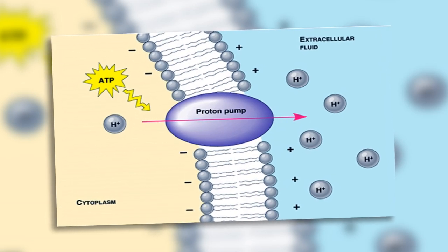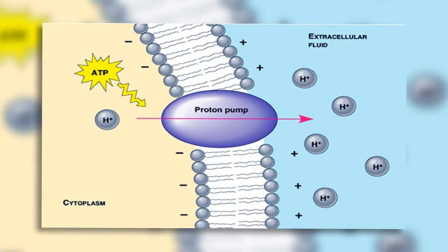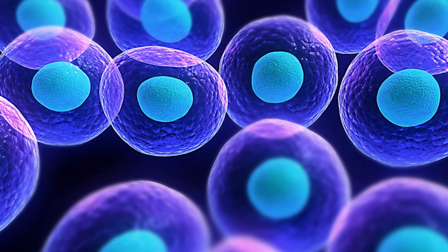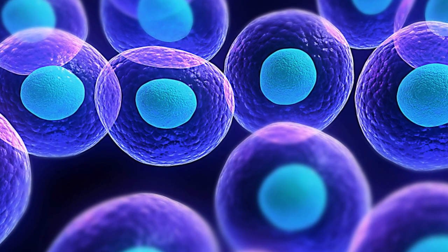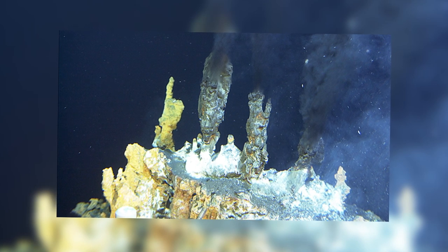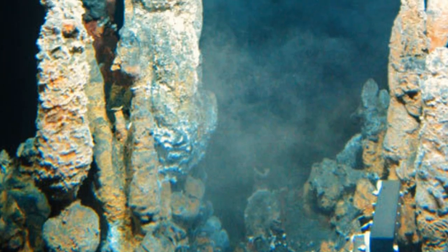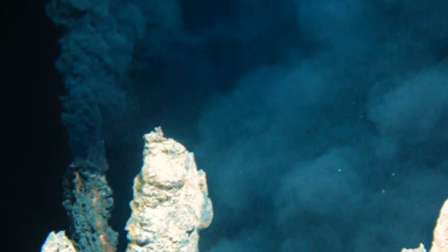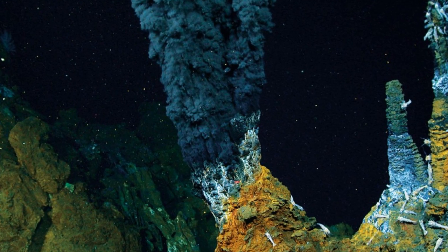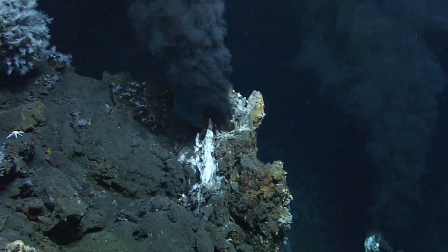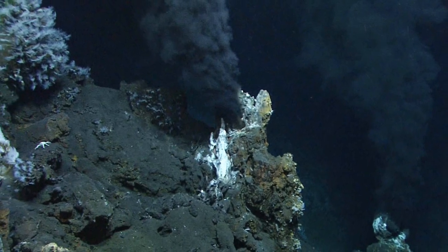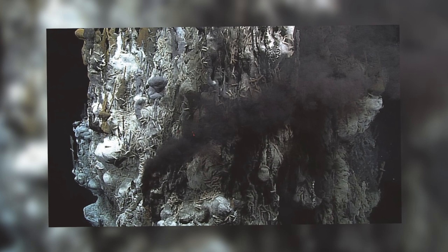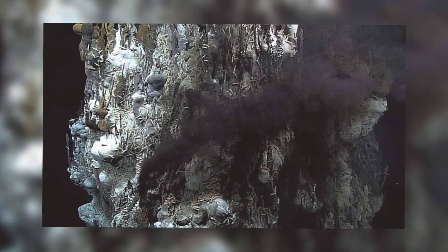Cells today achieve this by using proton pumps — complicated structures in the cells that move protons across their membranes to maintain the gradient. However, these are very complex structures that could not possibly have suddenly come into existence. So the theory goes that life must have begun somewhere that had a natural proton gradient of its own, and just such a place happens to exist: the hydrothermal vents. The alkaline fluids coming out of the vents had a very low number of protons, whereas the ocean water, which at the time of life's origin was fairly acidic, contained a greater number of protons, creating a proton gradient from this difference in concentrations. Another feature of these alkaline vents is that they were highly porous, with many tiny holes filled with water, and scientists considered the possibility that these tiny holes could have acted as the first cells.